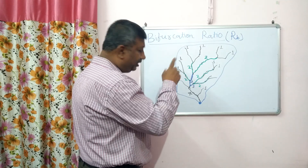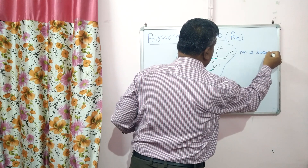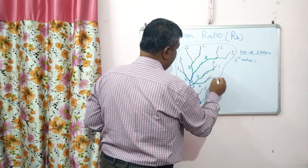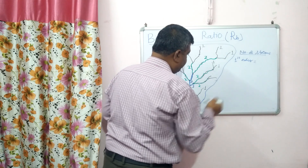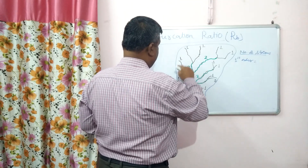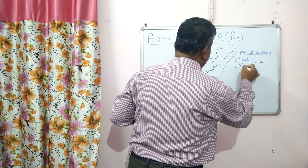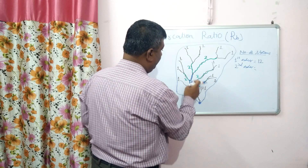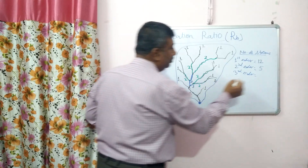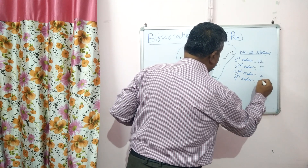Now count the number of streams in each order. First order stream count: there are twelve first order streams. Second order stream count: there are five second order streams. Third order stream count: there are two third order streams. Fourth order stream count: only one fourth order stream.